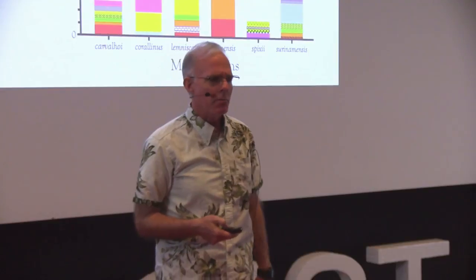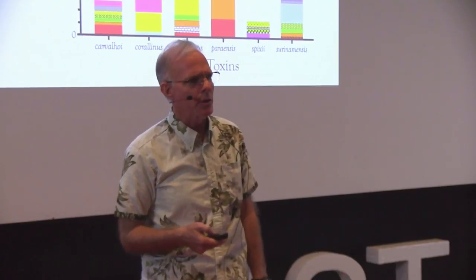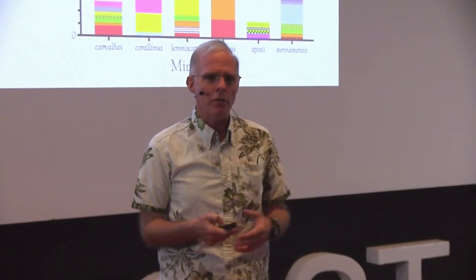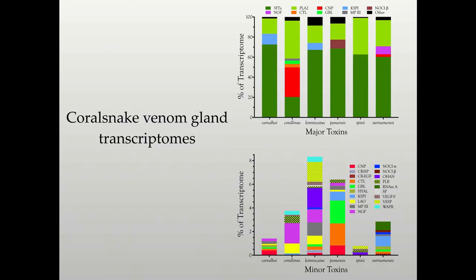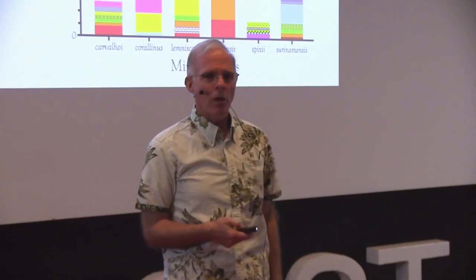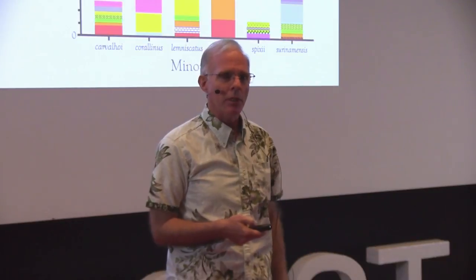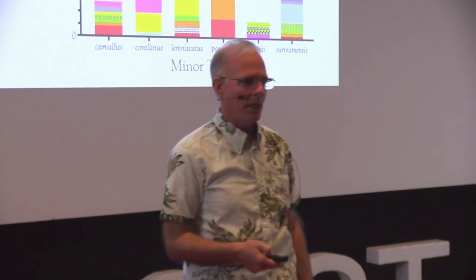A few years later, we had the same problem. This time I arrived at a different solution. These were venom gland transcriptomes from six Brazilian coral snakes. We plotted all the major components — those 2% or more of the transcriptomes — in the upper panel. What was left over we plotted in black. Those little black segments at the top are then represented in the bottom panel by the minor components. Not only did it communicate better, but it was kind of pretty too. Best looking graph I ever made.